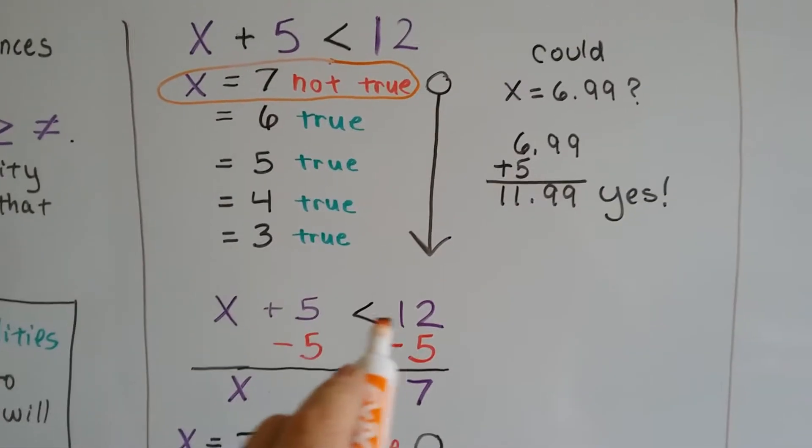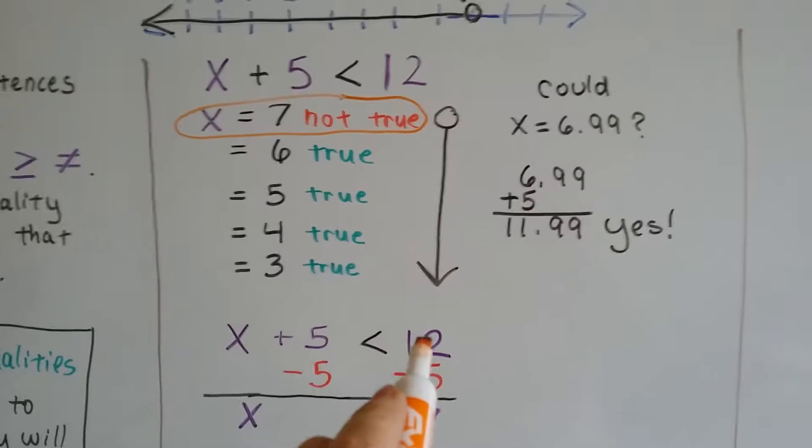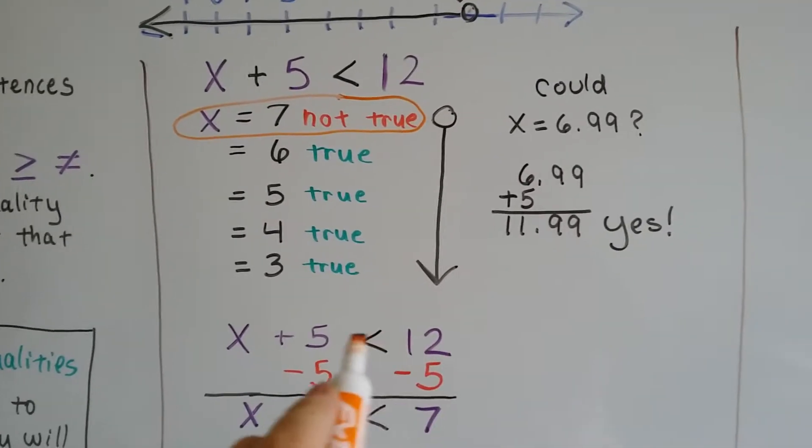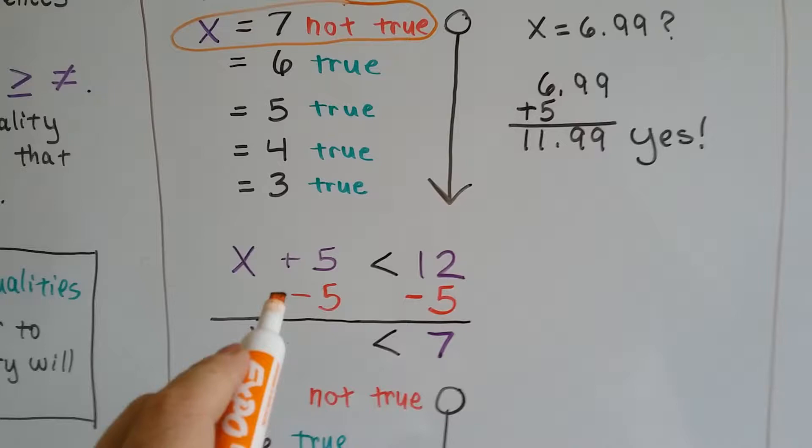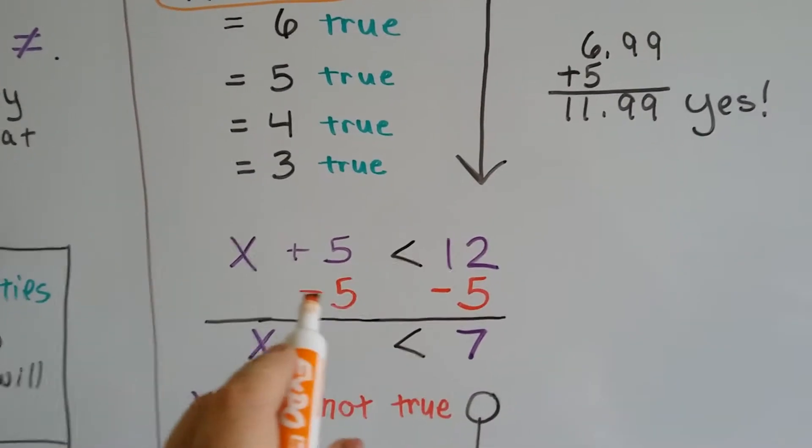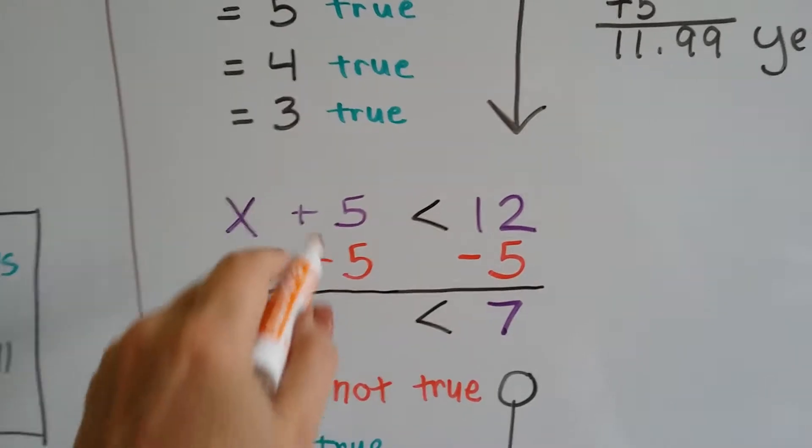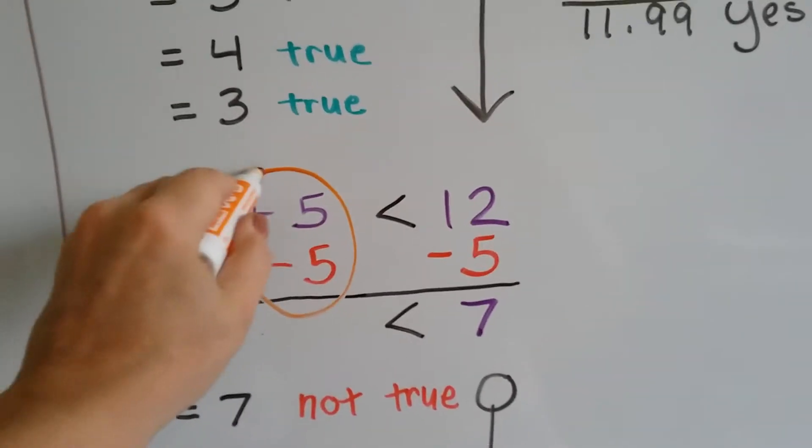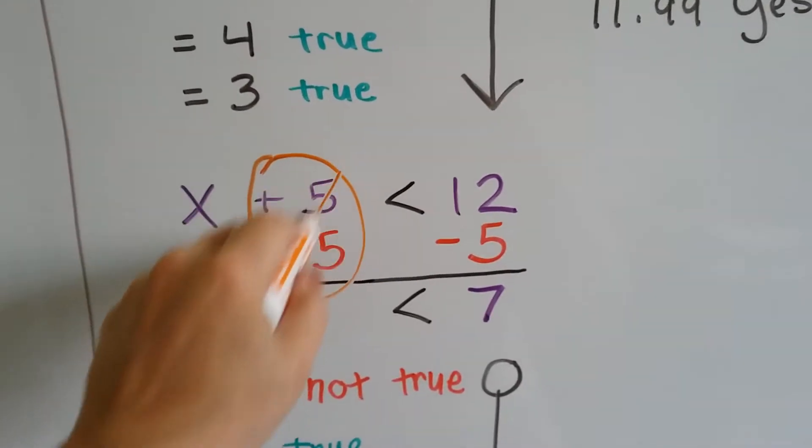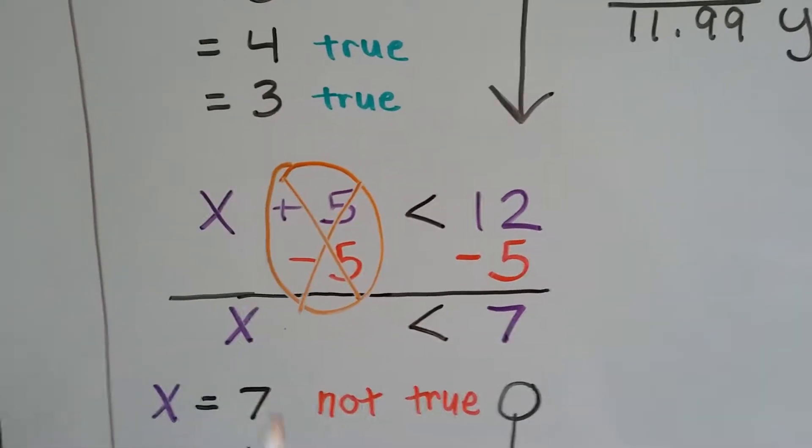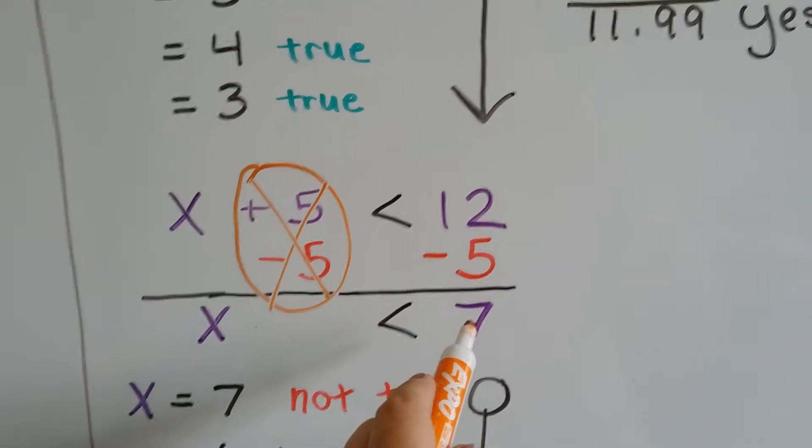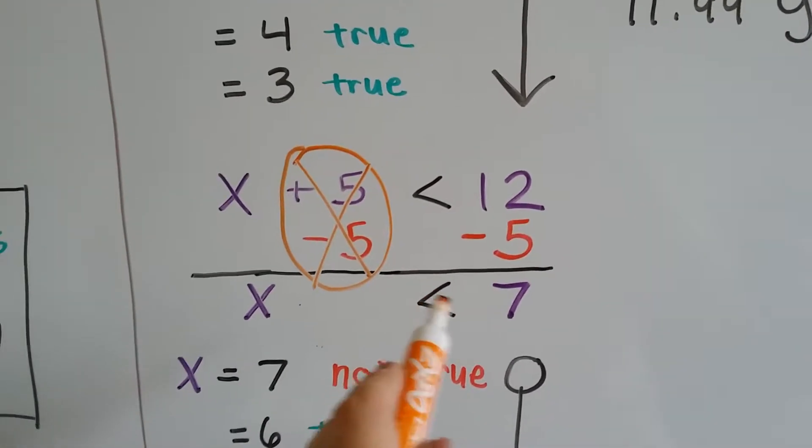Here's our inequality again. x plus 5 is less than 12. If we were to take the 5 away from each side of this less than sign, plus 5 take away 5 creates a zero pair. If we have 5 and take 5 away, we have zero. We take 5 away from the 12, we have 7. Now we have x is less than 7.